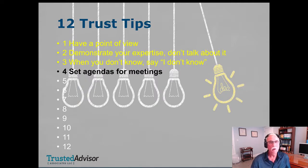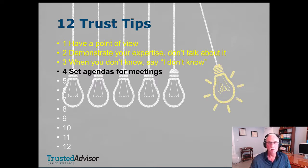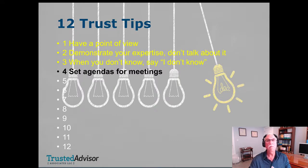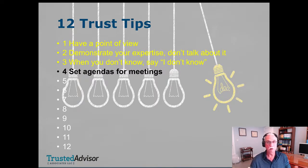At the outset of any meeting, say: 'I thought I'd take a minute and outline what I thought we should accomplish here today. Does this make sense? Does this work for you?' That gets everyone's buy-in. If the conversation goes off track, you've now earned the right to say, 'We agreed to cover this — do we want to come back to the main agenda?' You become a group, a 'we,' enlisting everybody on your side. That's a tremendous tool for reliability.